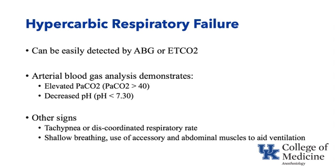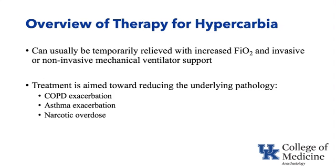Other signs of hypercarbic respiratory failure include tachypnea, discoordinated respiratory rate, shallow breathing, and use of accessory and abdominal muscles. Treatments are usually temporarily relieved with increased FiO2 and typically require invasive or non-invasive mechanical ventilator support. Definitive treatment addresses the underlying cause, such as COPD exacerbations, asthma exacerbations, or narcotic overdoses.